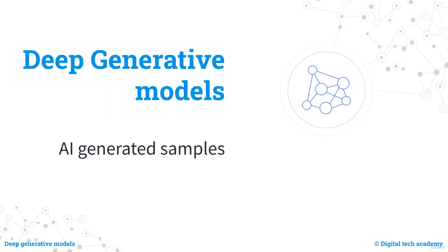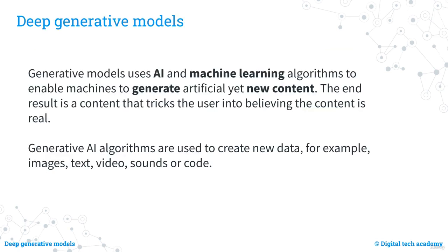Let's start by introducing what is meant by generative models. Generative models use artificial intelligence and machine learning algorithms to artificially generate new content, and the result should be so convincing that you think it is real, when in fact it was generated by an algorithm. Examples of content that can be generated include images, text, video, speech, sound, or code. In this course, we will mainly focus on images, but we will also draw on ideas from other kinds of content.